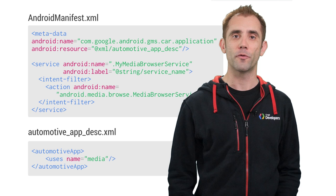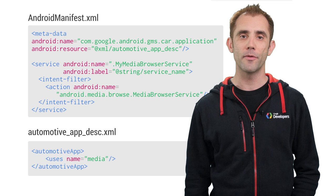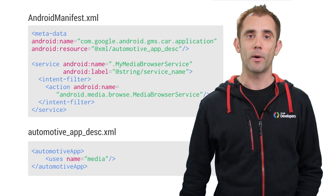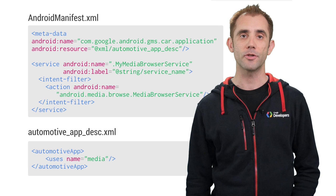Let's head back to the studio and look at some code so I can show you how it's done. To implement all this cool functionality, the first step is we need to set up the Android manifest XML to tell Android Auto that your application provides services for cars. You need to provide an XML file like this one here with an automotive app tag along with a media attribute since we're implementing a music playing application.